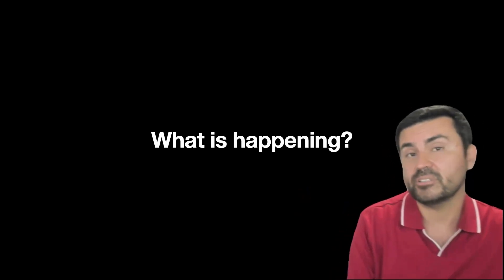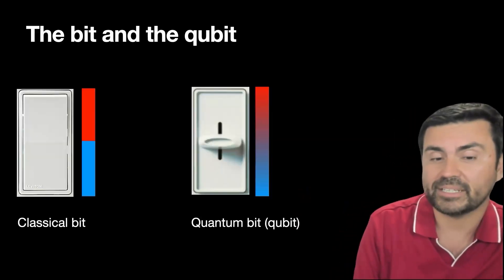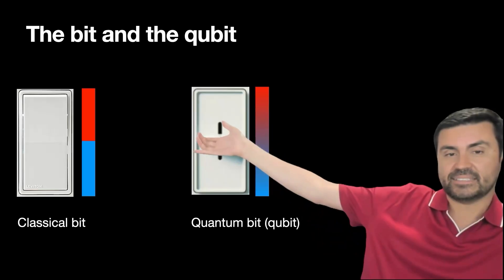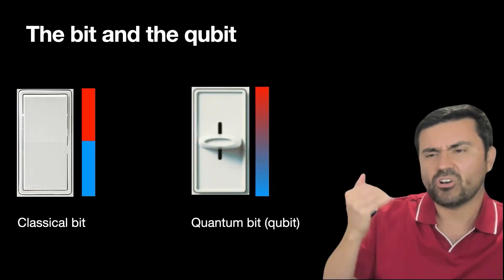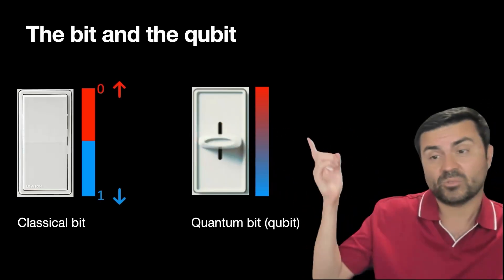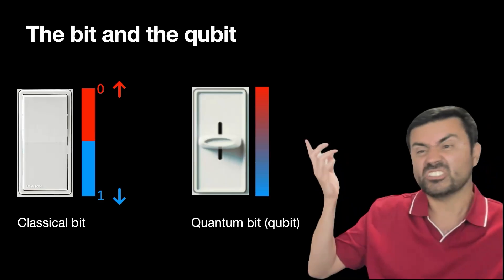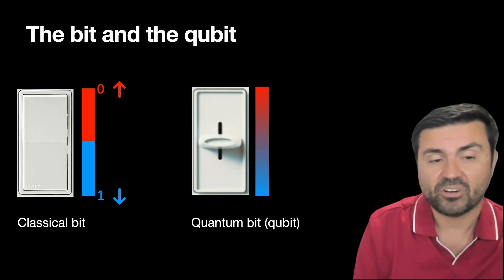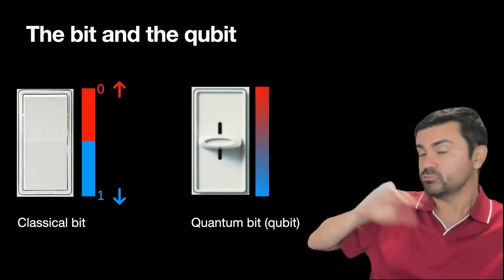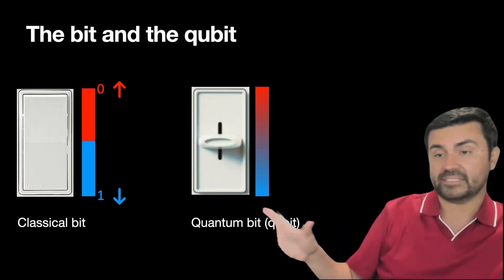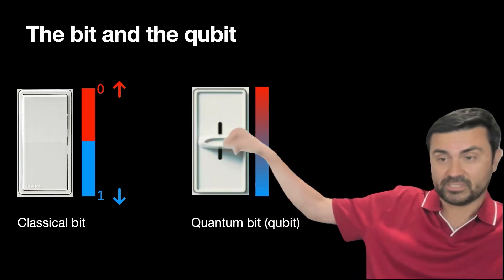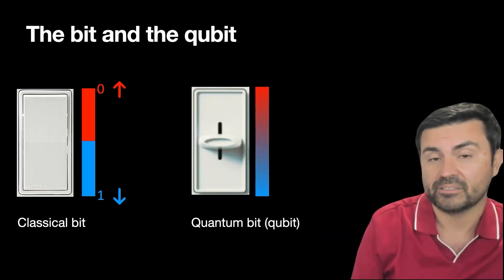To understand what's happening behind the scenes, we have to learn what a qubit is. I like to think of a bit as an on-off switch. The bit can be on — we'll call that zero — and off, which we'll call one. The bit can be in one of those two states, and that's it. Computers are made of billions and trillions of these bits.